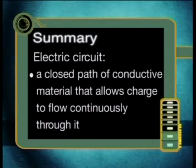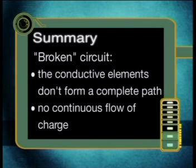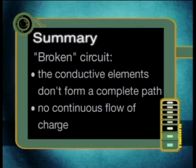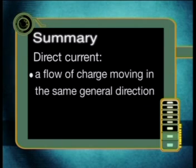Before I continue, let's quickly summarize what we have learned from the demonstration using the circuit board. An electric circuit is an unbroken loop or closed path of conductive material that allows charge to flow continuously through it. If a circuit is broken, that means its conductive elements no longer form a complete path and there will be no continuous flow of charge through it. The current in this circuit is direct current — it is a flow of charge moving in the same general direction.